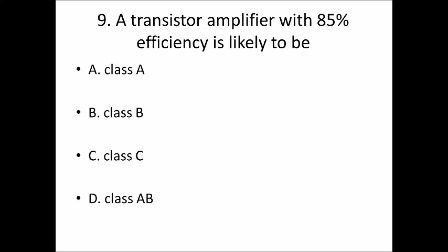Ninth bit: A transistor amplifier with 85% efficiency is likely to be. Option A, class A. Option B, class B. Option C, class C. Option D, class AB. Answer is Option C, class C.